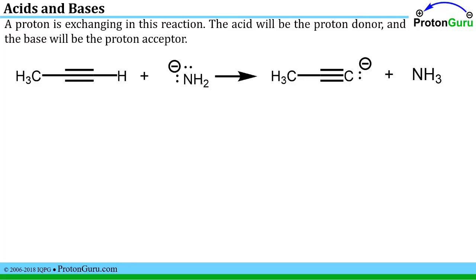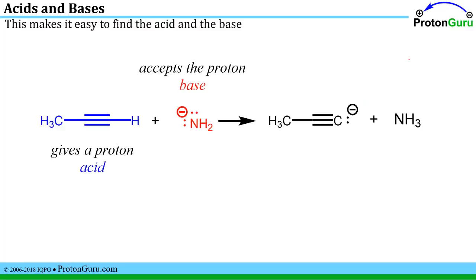Here is a similar problem where we are again exchanging a proton. This carbon has a proton to start but not in the product. This nitrogen has two protons to start and three in the products. That makes it easy to identify the acid — the species that supplies the proton — and the base, the entity that accepts the proton.